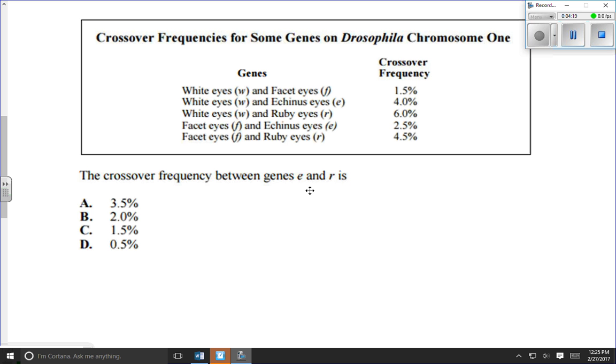So here we have crossover frequencies, also known as recombination frequencies, for some genes on Drosophila chromosome number one. So I'm just going to write out what these genes are, because they're kind of hidden in here, it's kind of hard to see. But we've got white eyes, which is gene W, we've got facet eyes, I don't know what that is, but that's gene F, we've got pechinous eyes, gene E, and we've got ruby eyes, gene R. So those are our four genes that are found on the chromosome. So I can go ahead and make my number line here, make my hypothetical chromosome from one end to the other.